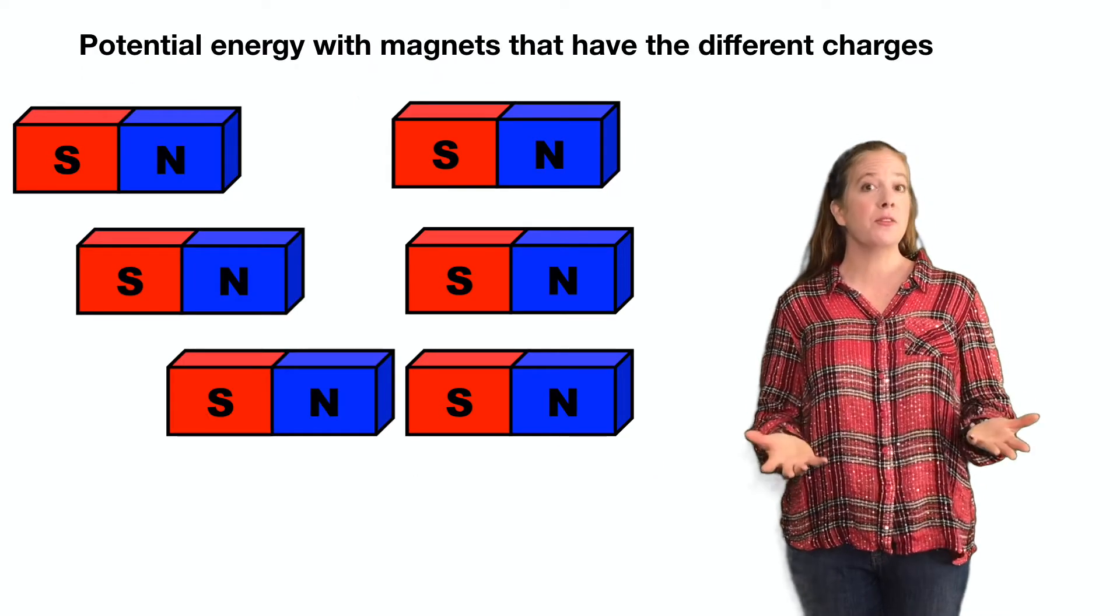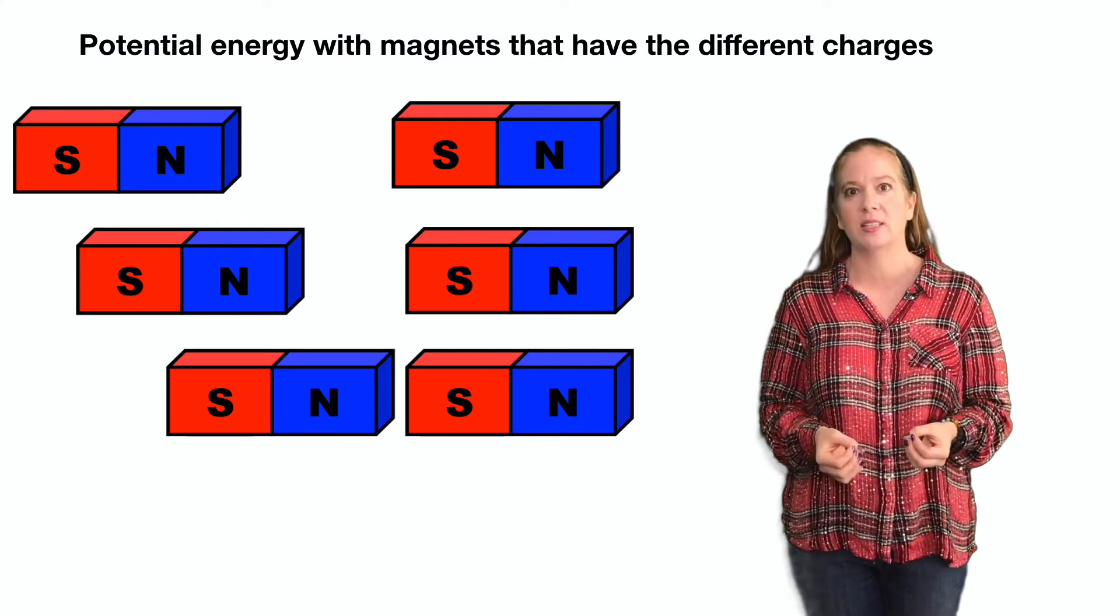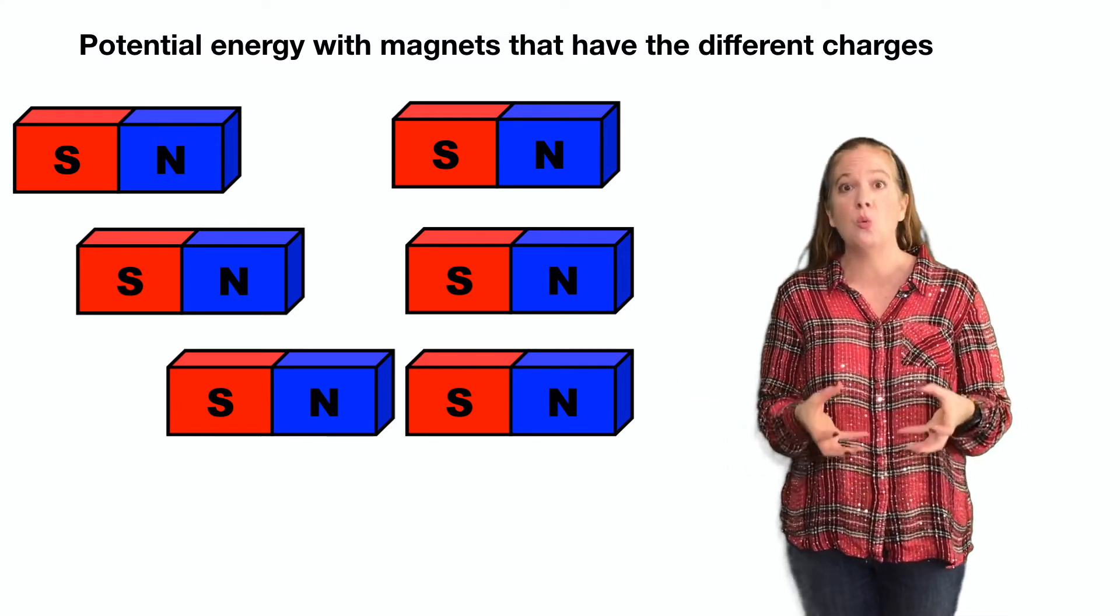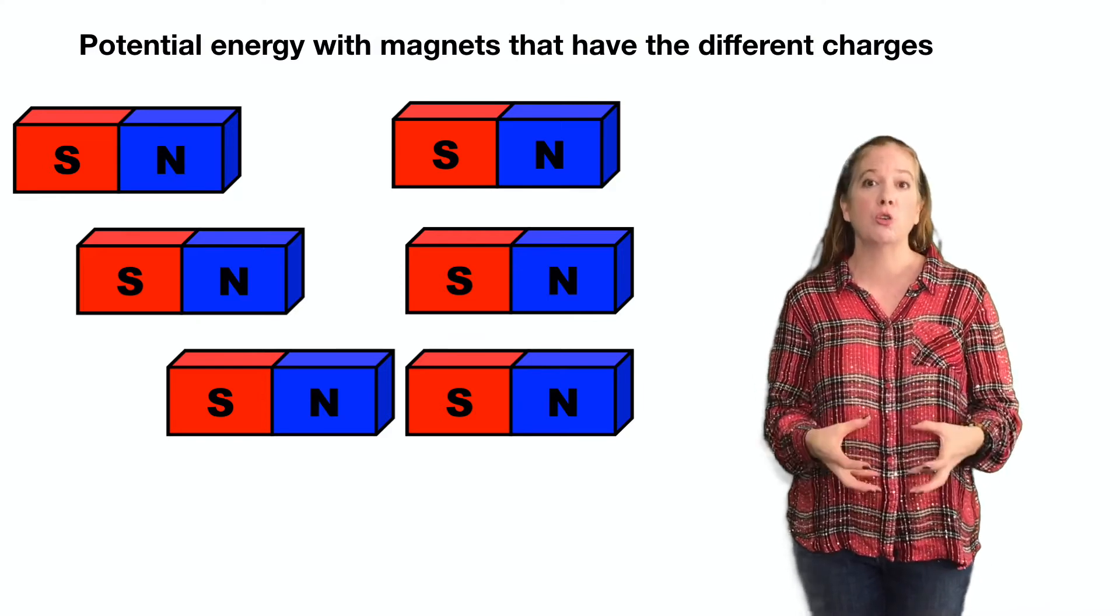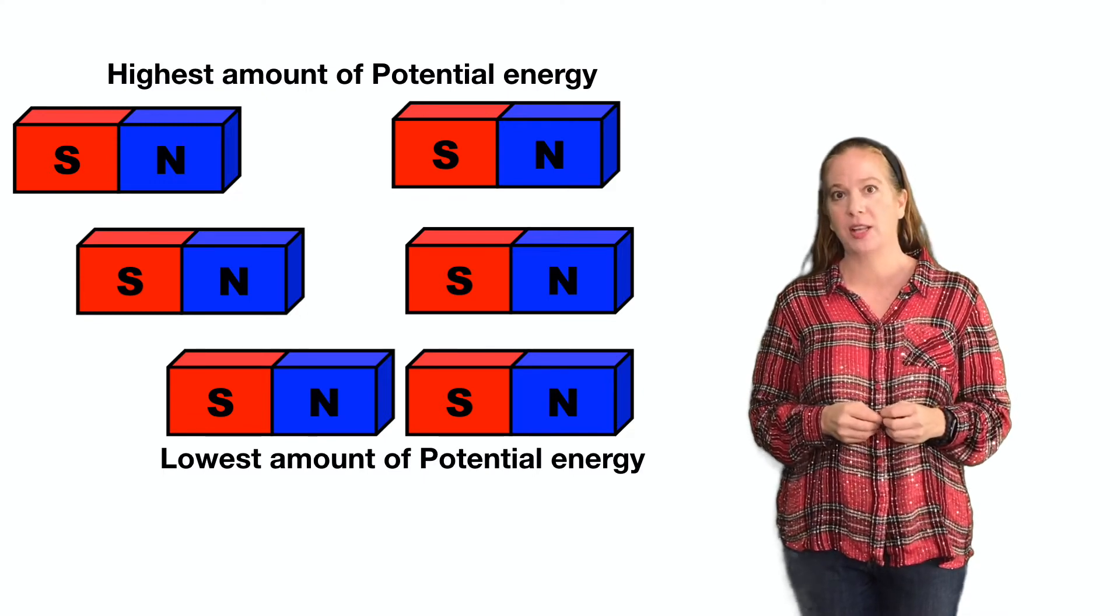As magnets with different charges get closer together, the amount of potential energy actually decreases. That's because they actually do want to touch. So the closer the magnets with opposite charges are, the smaller the potential energy.